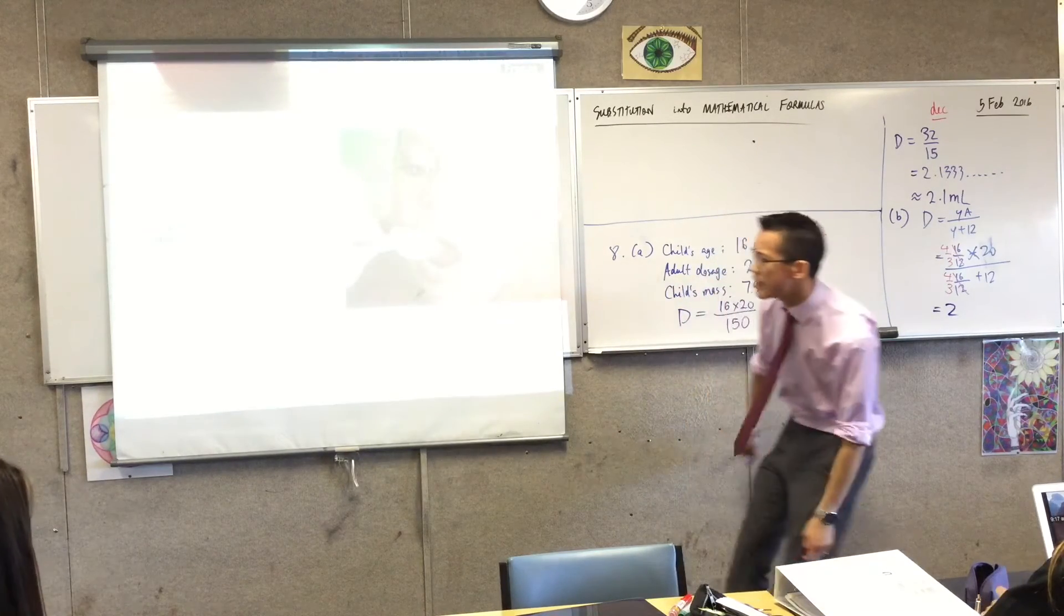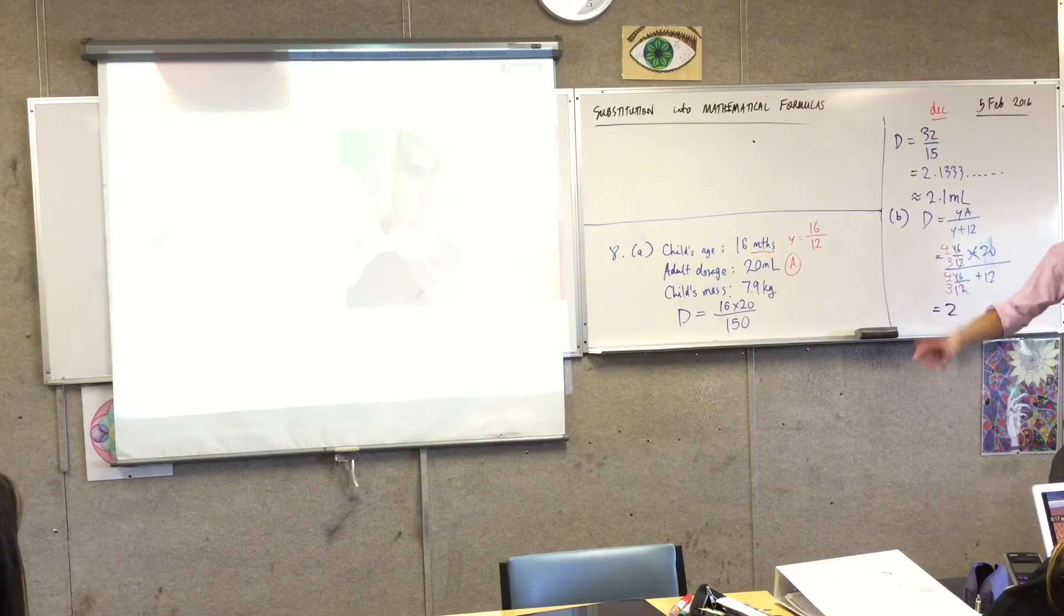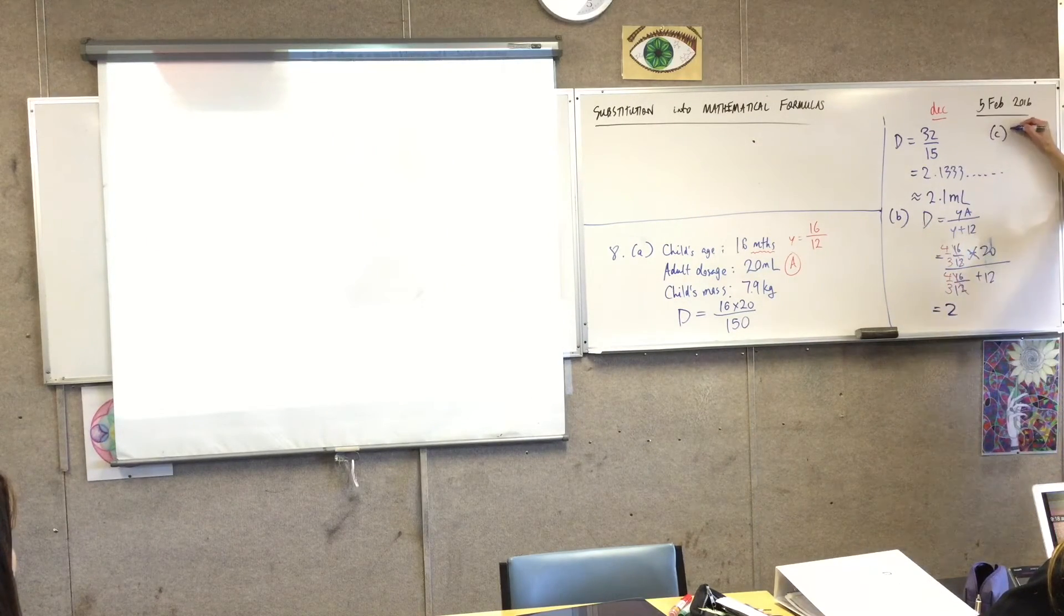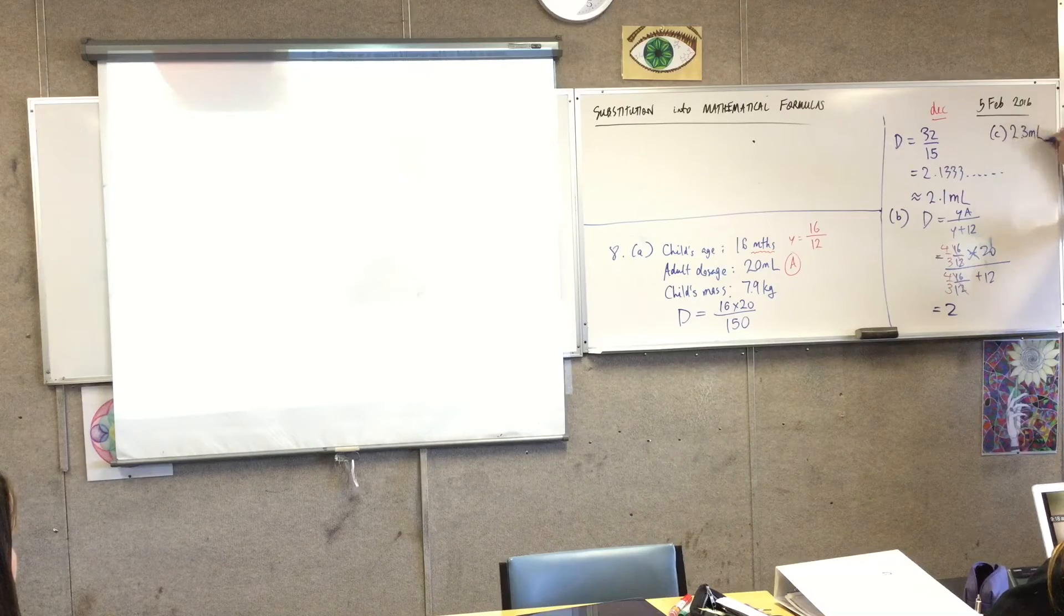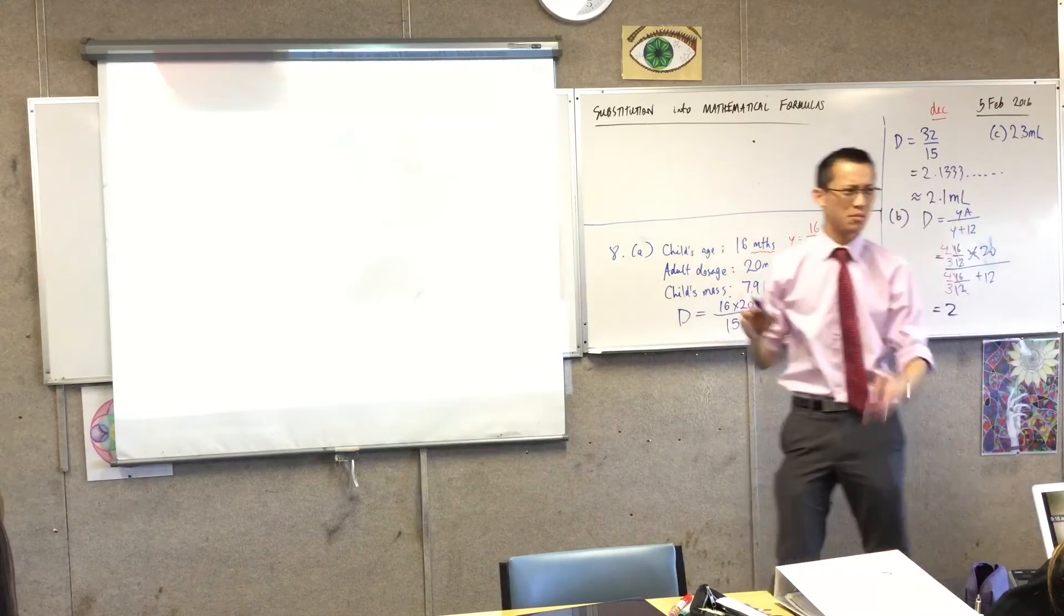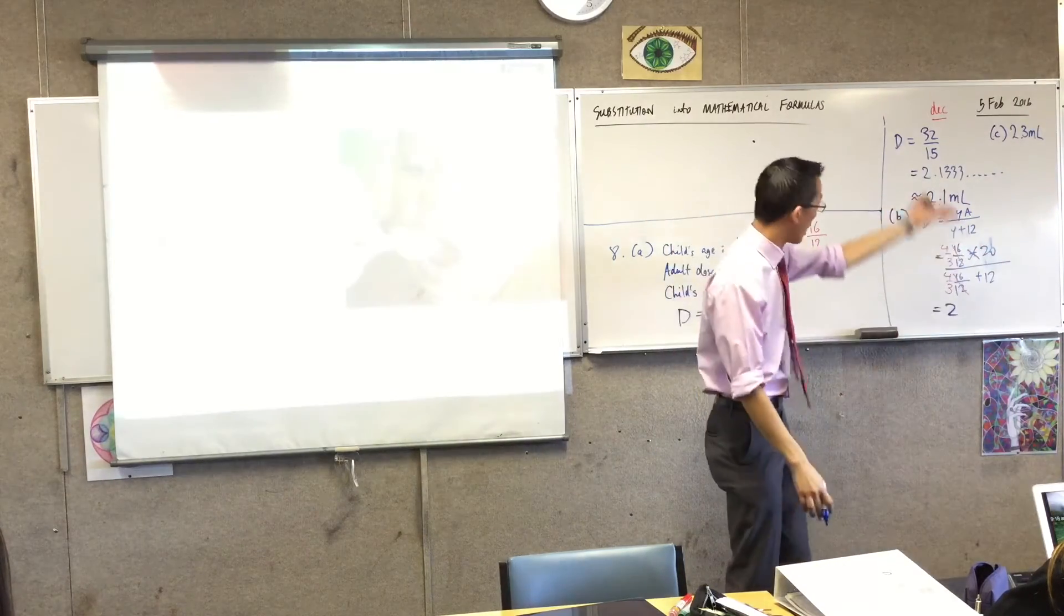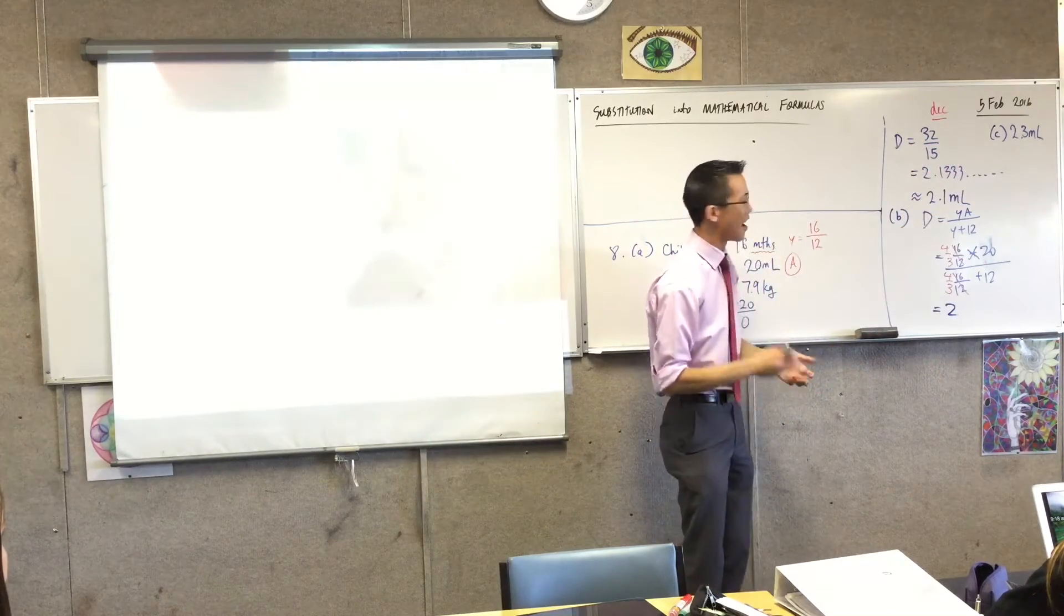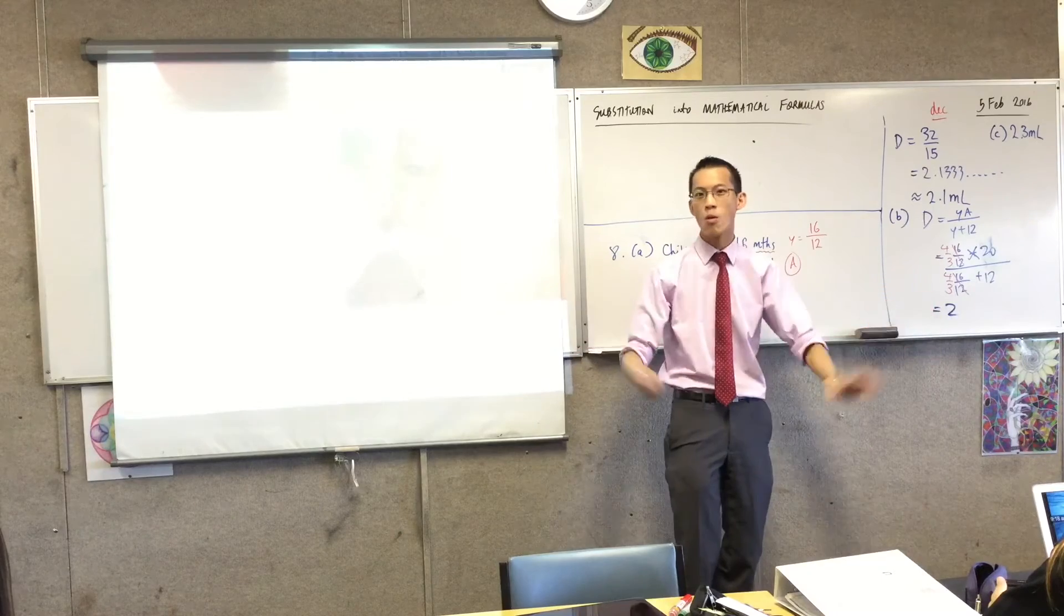Now, if you're looking at part C, part C thankfully is pretty much as straightforward as A. So I'm just going to go ahead and give you the answer. If I recall, I think it rounds off to 2.3, like 2.2 something or other. Yeah. It comes up to 2.3. Okay. Great. We have our answers now, but what do we do with them because they're all different?